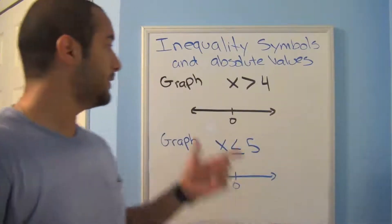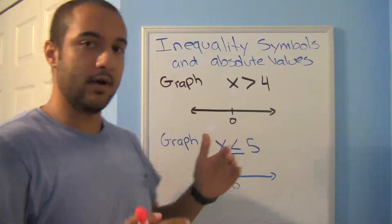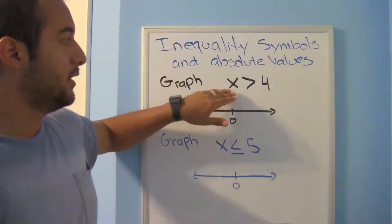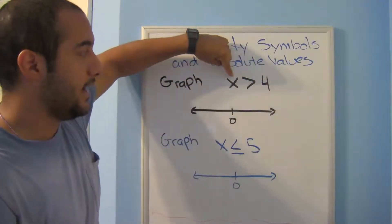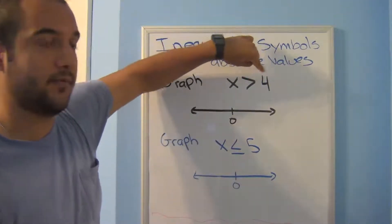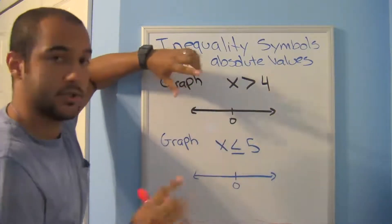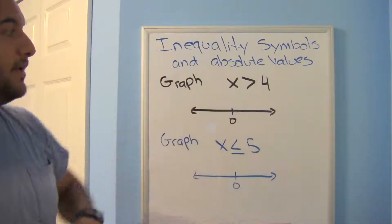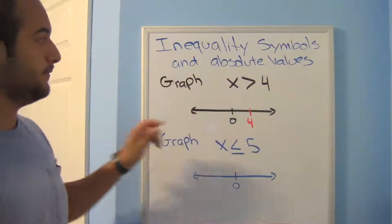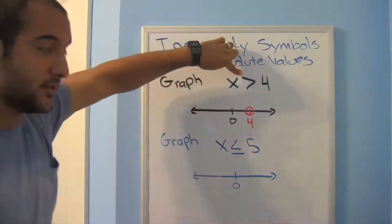Now let's graph some inequalities. We're asked to graph x greater than four. Notice I always read it left to right, the same way you read a book. I want all numbers that are greater than four. Here's my number line — I always show arrows at the ends and my origin. My main number is four, which is on the right side since it's positive. This is a strict inequality, so I'm going to put an open circle over four.